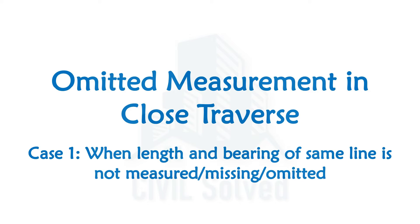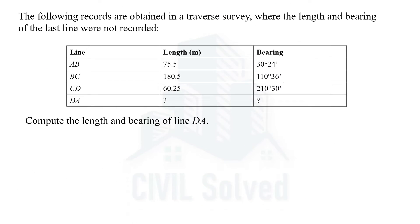Welcome everyone. In this video we are going to discuss omitted measurement in closed traverse. More specifically, we are going to solve an example related to omitted measurement in a closed traverse when the length and bearing of a single line is not measured, missing, or omitted. Sometimes when working in a closed traverse, due to any reason we could not measure the length or bearing of a particular line — for example, due to some obstruction between two points. But if it is a closed traverse, using the length and bearing of other lines we can calculate the length and bearing of the missing line.